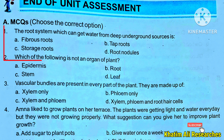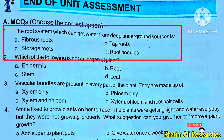Question 1: The root system which can get water from deep underground sources is... Options: A. Fibrous Roots, B. Tap Roots, C. Storage Roots, D. Root Nodules.